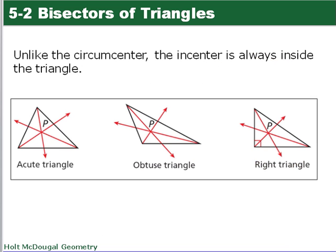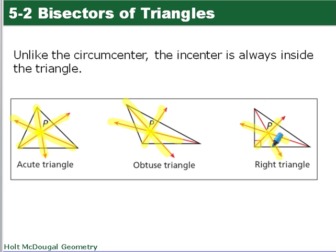Unlike the circumcenter, the incenter is always inside the triangle. Whether it's an acute triangle, an obtuse triangle, or a right triangle, the incenter will always be inside the triangle, because we're always bisecting the angles.